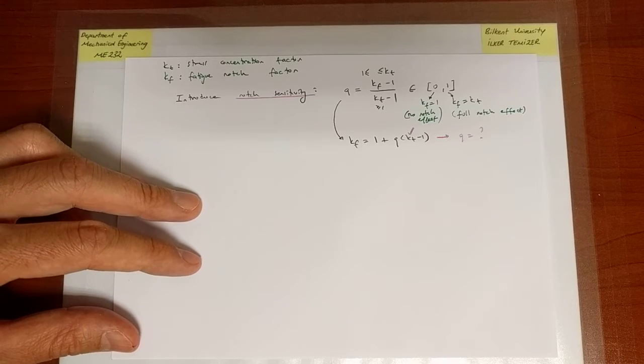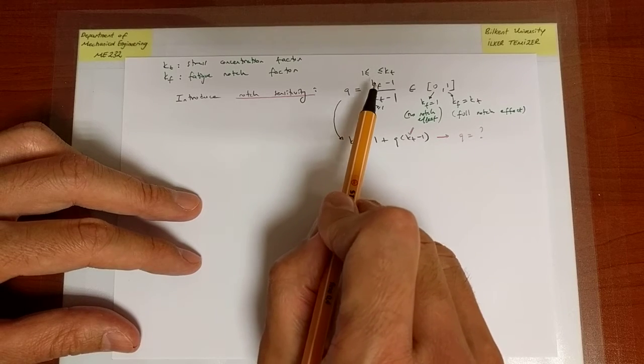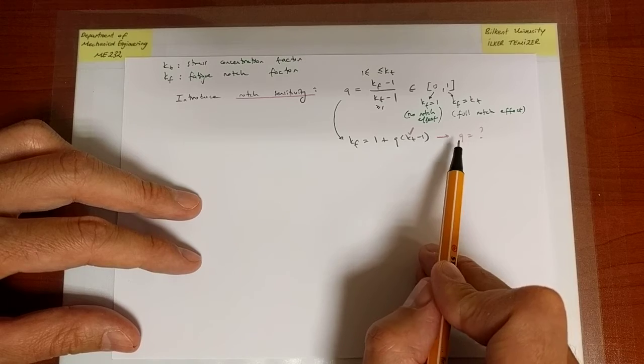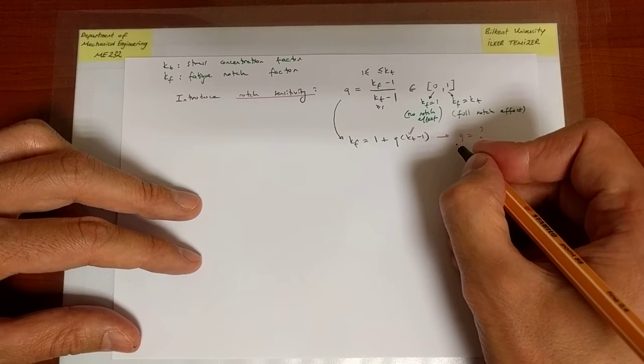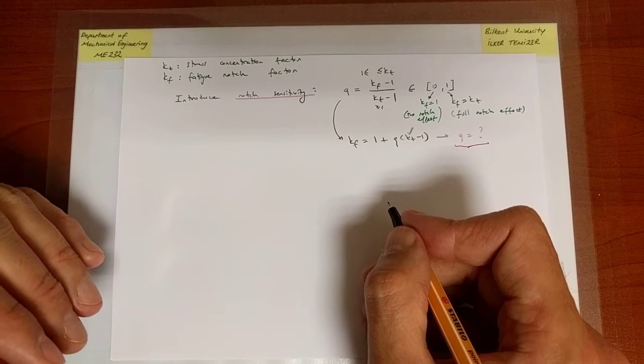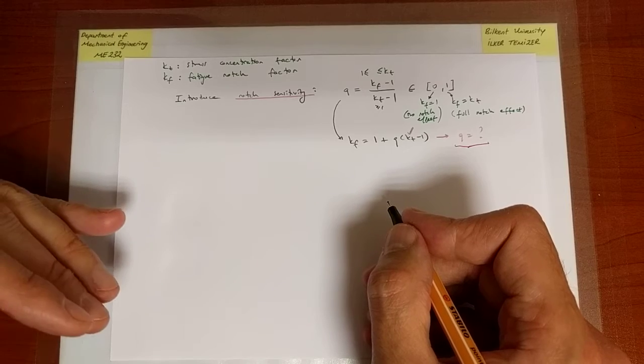The question is, what is the value of Q, therefore? So we're shifting the emphasis from a direct expression for KF to a direct expression for Q, just because it's more convenient to do so. Here, we have several options. Remember, we have data, and as I've mentioned before, we can use the data directly.